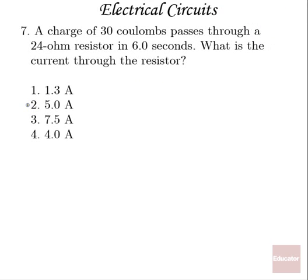Moving on to number 7: A charge of 30 coulombs passes through a 24-ohm resistor in 6 seconds. What is the current through the resistor? Well, current is charge divided by time, again. 30 coulombs over 6 seconds is just going to be 5 amperes. Correct answer number 2.